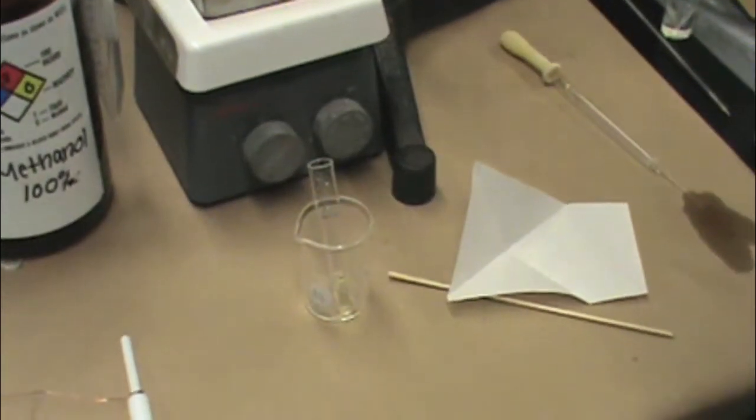If crystals do not begin to form immediately, allow your Kreg tube to cool to room temperature, and then add an ice bath.